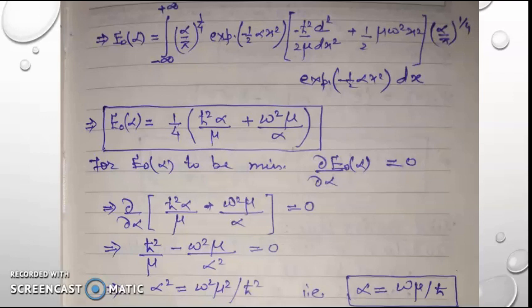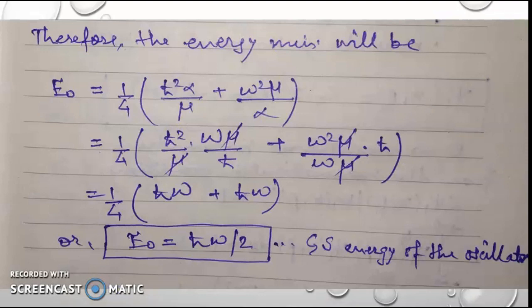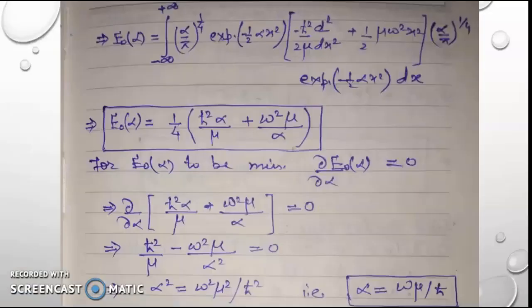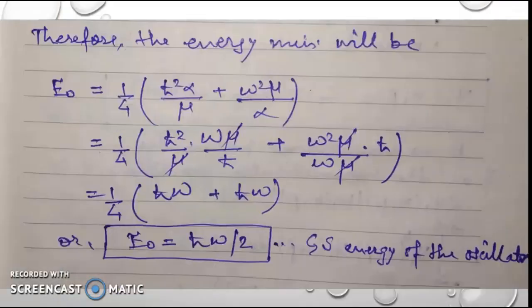Now for this energy to be minimum, we set the partial derivative with respect to alpha of E naught alpha equal to zero. We differentiate the expression for E naught alpha with respect to alpha and get alpha equal to omega mu over h-bar. Therefore, substituting this value of alpha into the energy expression E naught alpha equal to one-quarter times h-bar squared alpha over mu plus omega squared mu over alpha and solving it, we get the ground state energy E naught equal to one-half h-bar omega. This is the ground state energy of the oscillator.